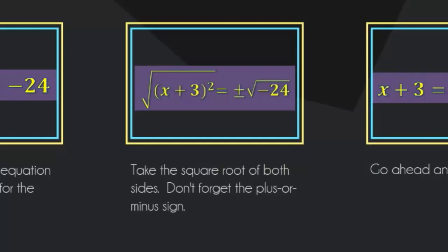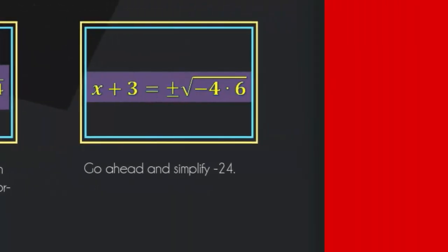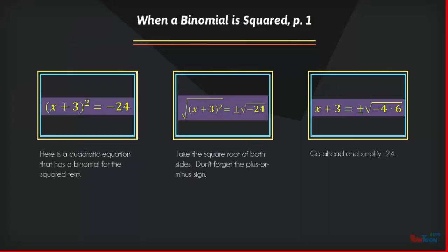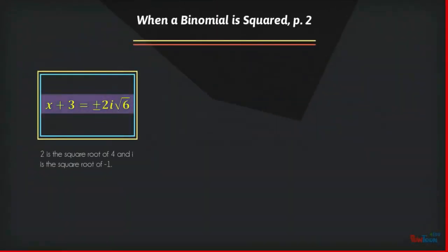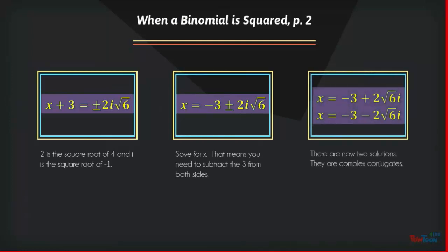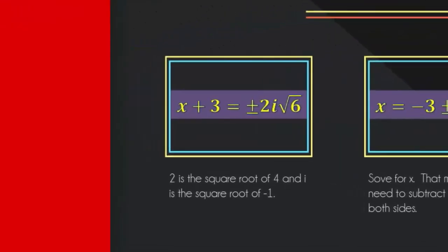Taking the square root of x plus 3 squared leaves us x plus 3 on the left, and on the right we are going to factor negative 24 into negative 4 times 6, because 4 is the largest perfect square factor in 24. Now the negative sign under the radical comes out as an i, and 4 will come out as a 2. Leaving us with x plus 3 equals plus or minus 2i times the square root of 6.